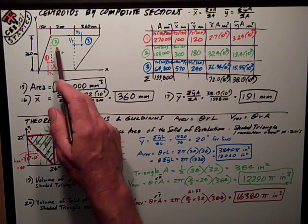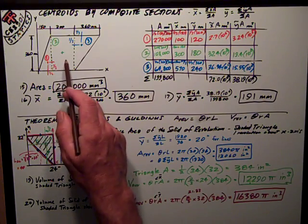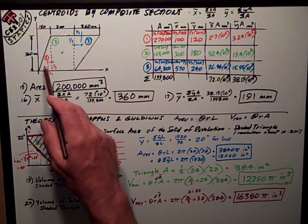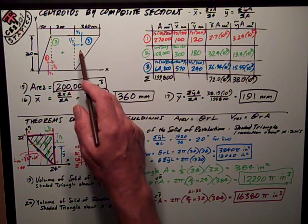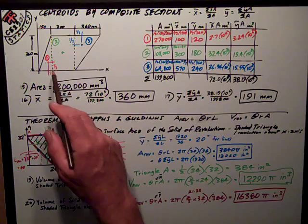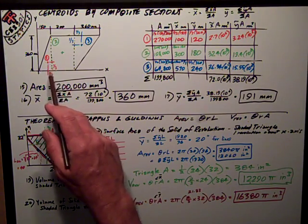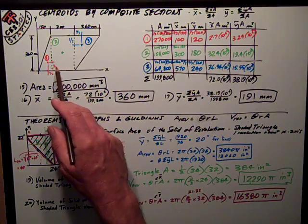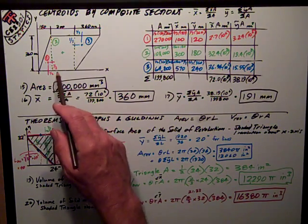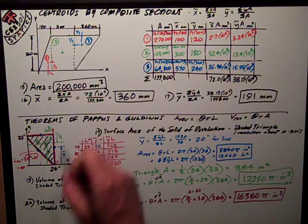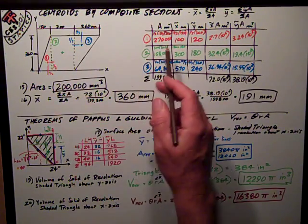But something that I think helps me, especially when I'm first getting started, is I want to know the centroid of these shapes: of this triangle, this rectangle, this triangle. So if you're having trouble visualizing that, you might make these little marks, an x in the center, and show for a triangle at least that one-third distance, just to remind yourself when you're doing the calculations of what that distance is.